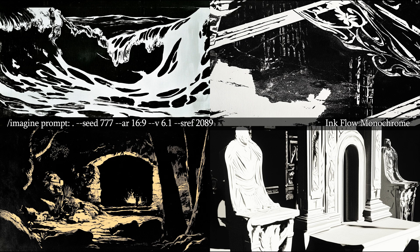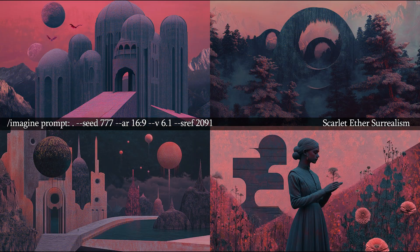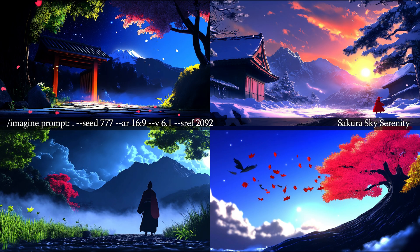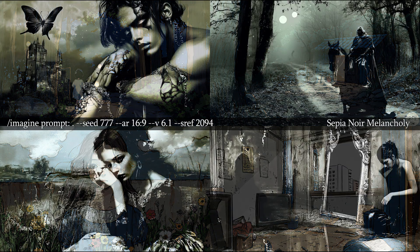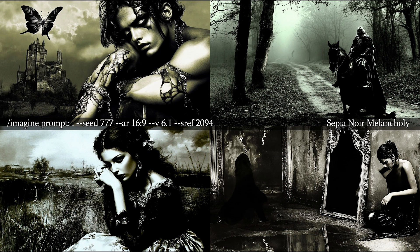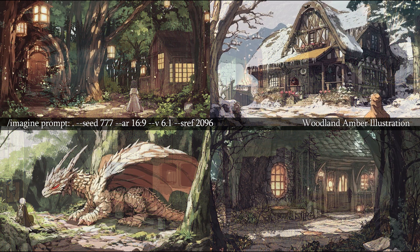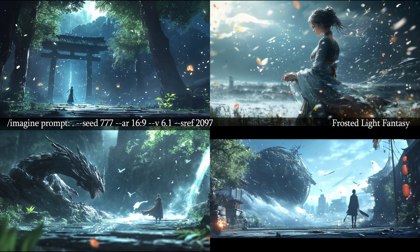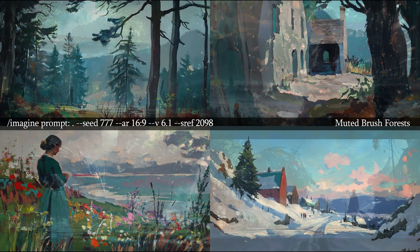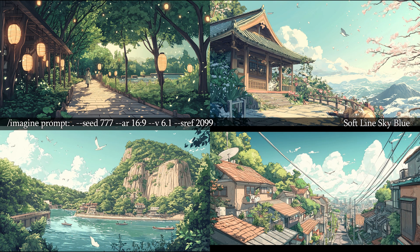2090: Grainy Blue Textured Painting. 2091: Scarlet Ether Surrealism. 2092: Sakura Sky Serenity. 2093: Nightfall Sketching Blues. 2094: Sepia Noir Melancholy. 2095: Dusty Memory Dystopia. 2096: Woodland Amber Illustration. 2097: Frosted Light Fantasy. 2098: Muted Brush Forests. 2099: Softline Sky Blue.